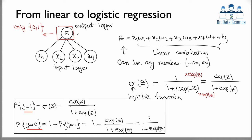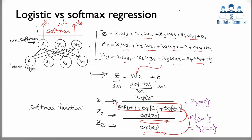Now, what would happen if we have more than two classes — say three classes? As before, we have four input features, but now the number of neurons in the output layer equals the number of classes. We can write each output as a linear combination of inputs, but now each weight w uses two indices: one referring to which input feature it multiplies, and the other corresponding to which output neuron z1, z2, or z3 it belongs to.